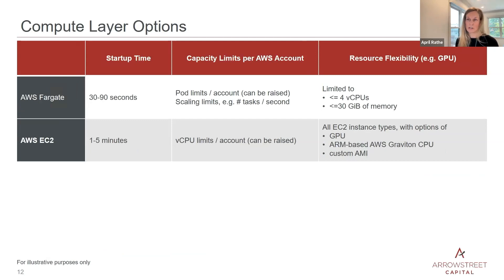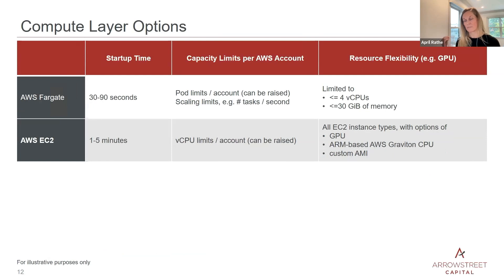We then looked at our compute layer options — Fargate and EC2 — where our main considerations were startup time and flexibility. We went with EC2 because we didn't want any constraints on resource profiles. We wanted to be able to use GPUs, any size memory or CPUs, and no limits on scaling requirements — so that multiple researchers can spin up their own clusters simultaneously without stepping on one another.